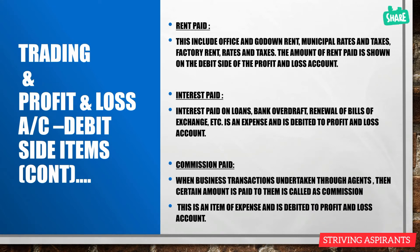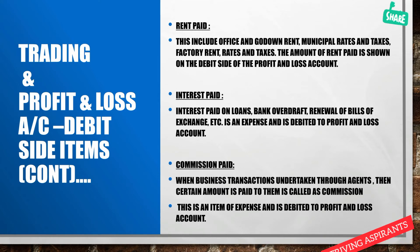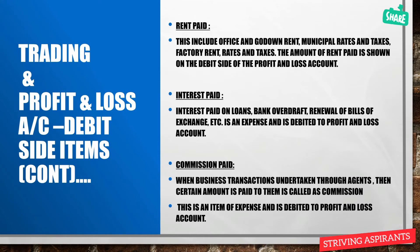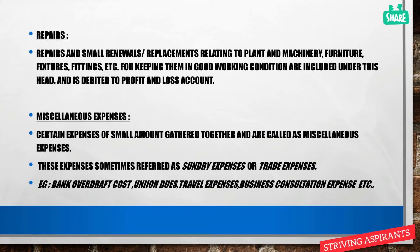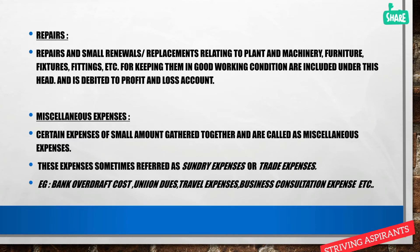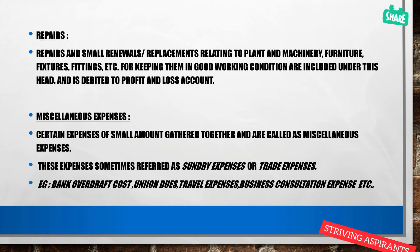Next is commission paid. When a company uses agents to sell their products, some commission amount is paid or payable to those parties, and this expense is debited to the profit and loss account. Next are repairs — small renewals, replacements, and maintenance of plant, machinery, furniture, fixtures, and fittings to keep them in good working condition are included as expenditure and debited to the profit and loss account.